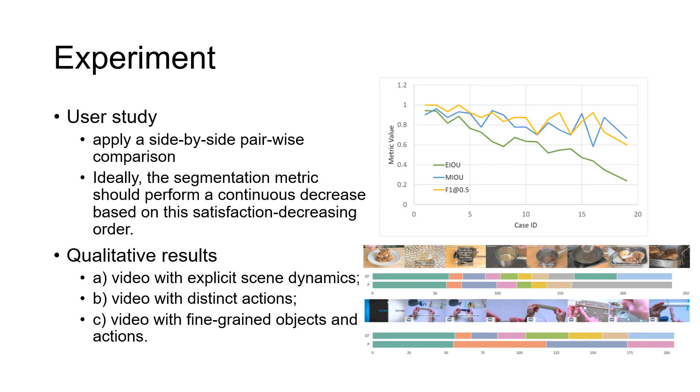And finally, we did the user study of our newly proposed evaluation metric by applying a side-by-side pairwise comparison. And also, we did qualitative results. We found that videos with explicit scene dynamics and distinct actions work well, but videos with fine-grained objects and actions are harder to deal with.